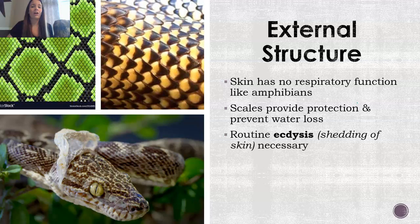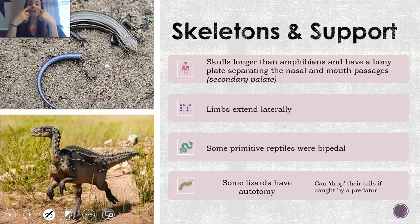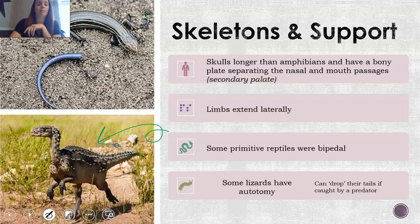The skeleton is also significantly different from amphibians. The skulls themselves are longer, and they have a bony plate called a secondary palate in the roof of their mouth that separates their nose from their mouth passages. Their limbs also extend laterally — out and down — so if you've ever watched a lizard crawl, you'll see their arms are kind of out as they move. It's also important to note that some primitive reptiles were bipedal, meaning they only walked on two legs.